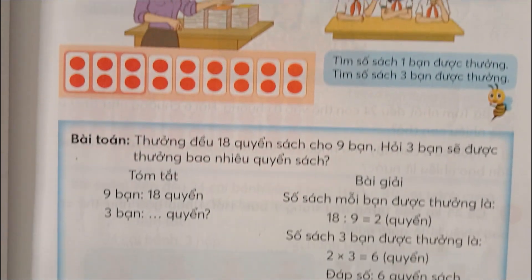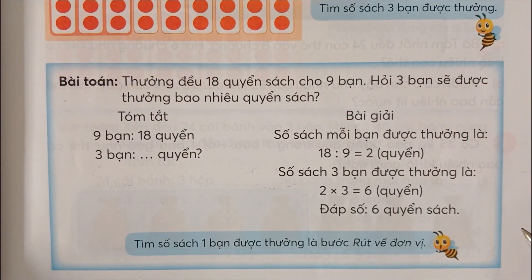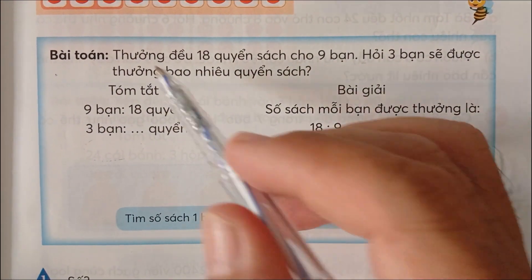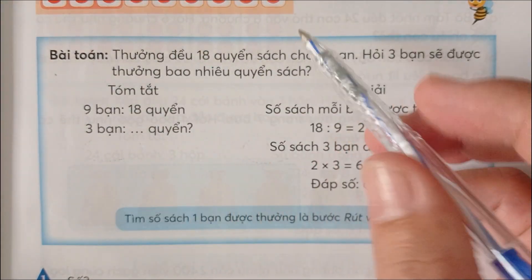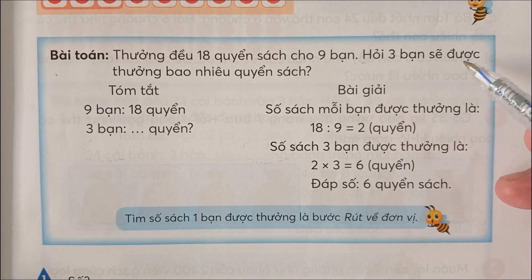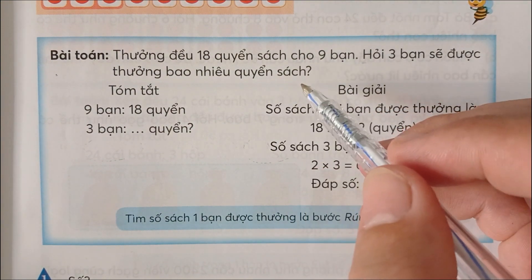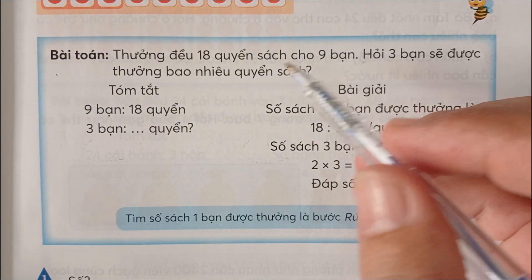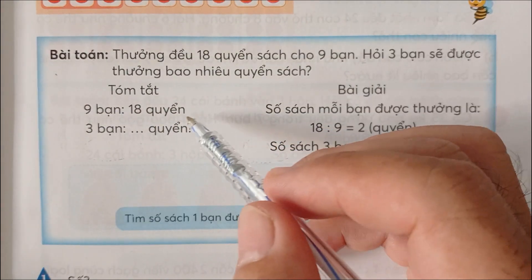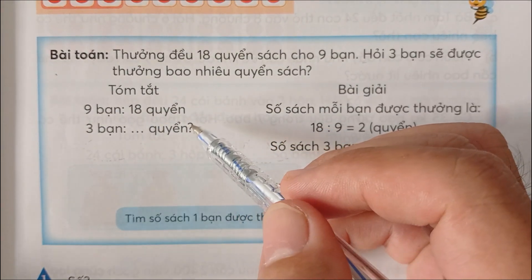Bài toán như sau: Thưởng đều 18 quyển sách cho 9 bạn. Hỏi 3 bạn sẽ được thưởng bao nhiêu quyển sách? Tổng tác 9 bạn thì 18 quyển, hỏi 3 bạn bao nhiêu quyển.